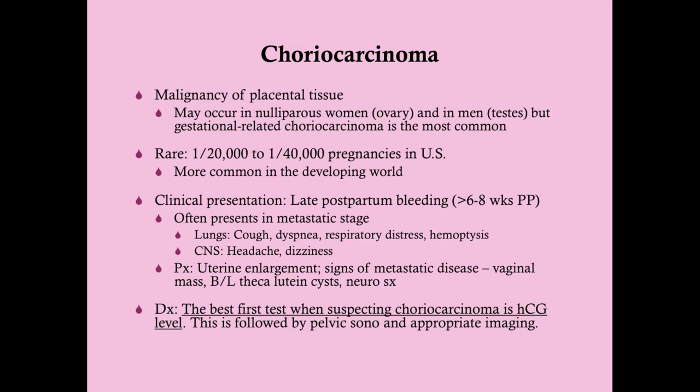On histology, the cytotrophoblasts and syncytiotrophoblasts will not be organized well into placental villi — they'll be anaplastic, and you'll see multiple mitotic figures. This is a tumor that very easily invades the myometrium and even past the external wall of the uterus, and can also invade the uterine vasculature. Hence it will very easily metastasize, and most often it presents in the metastatic stage.